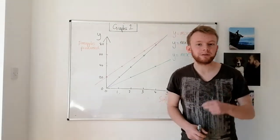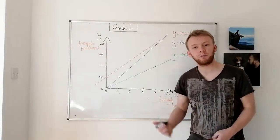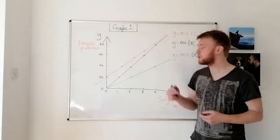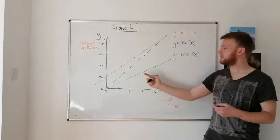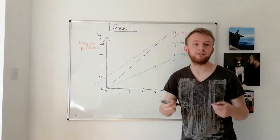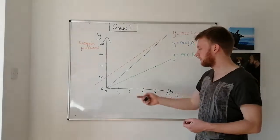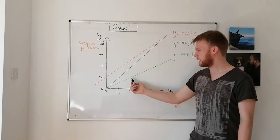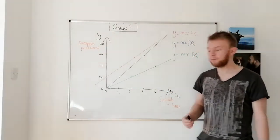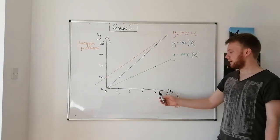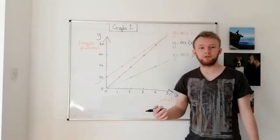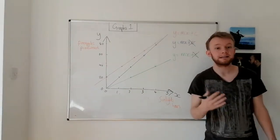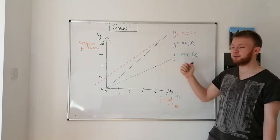Now for direct proportionality, what that means is as you double one quantity, does the other double? Is that constant? Is that M value the same for all of the points that you have plotted? So for my green line here, I started off with two sunlight hours producing 20 pineapples. If I double my sunlight hours to four, does the number of pineapples produced double 20 to 40? Yes. Yes, it does. This is a directly proportional relationship.